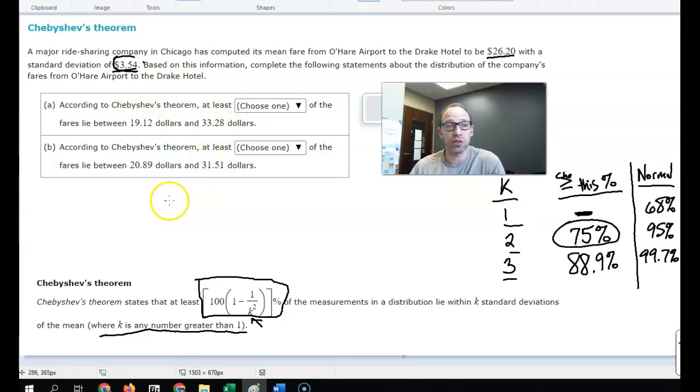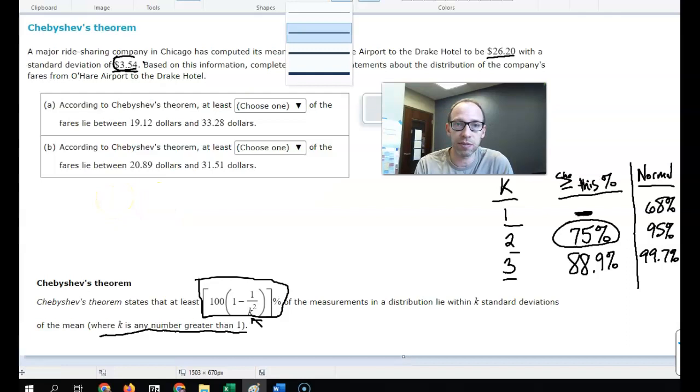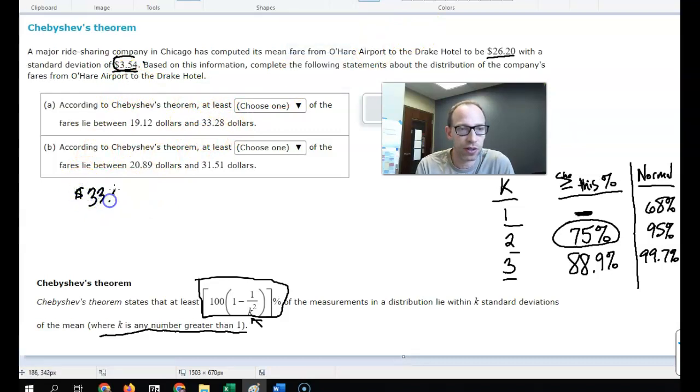...we're looking at what percent of the fares lie between these two amounts. There's lots of different ways to do it. The one way that I might recommend is to take the top one, thirty three twenty eight, and see how far we are away from the mean. So in this case, it's twenty six twenty is the average.